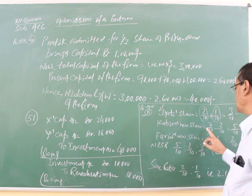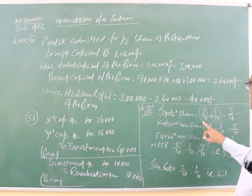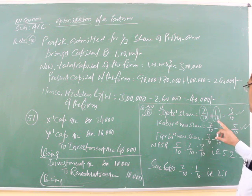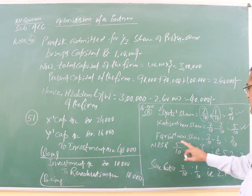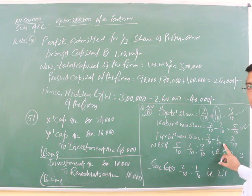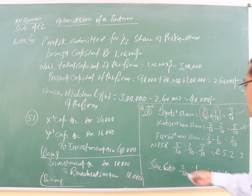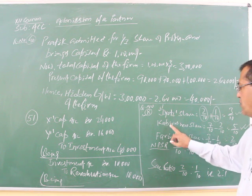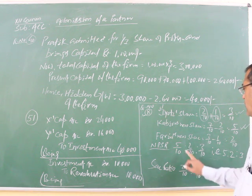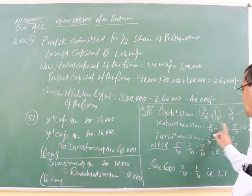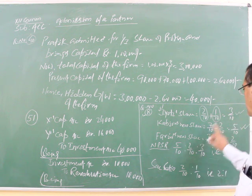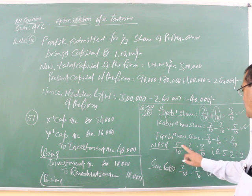Kabir's earlier share was 7 by 10. After sacrificing 2 by 10 to Jehuti, Kabir's new share will be 5 by 10. Farid's share was 3 by 10, and after contributing 1 by 10 to Jehuti, Farid's new share will be 3 by 10 minus 1 by 10, which is 2 by 10. So the new profit sharing ratio between Kabir, Jehuti, and Farid will be 5 by 10 : 2 by 10 : 3 by 10, that is 5 is to 2 is to 3.